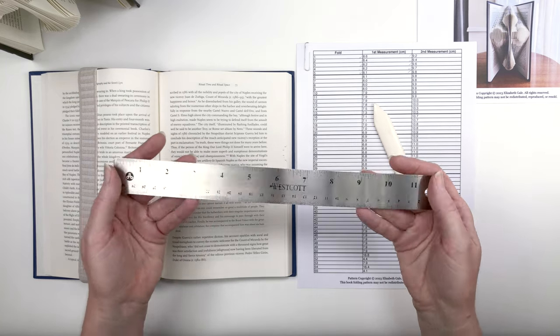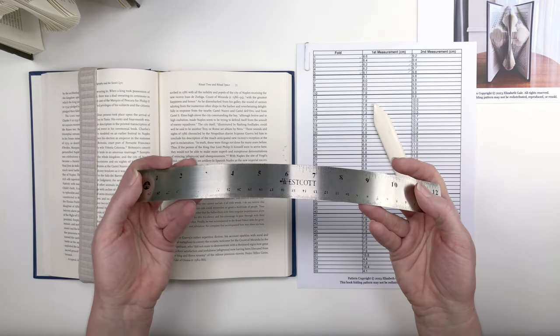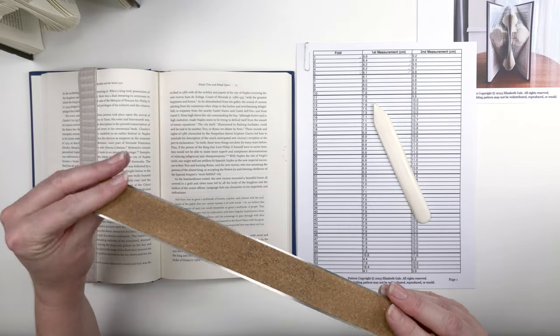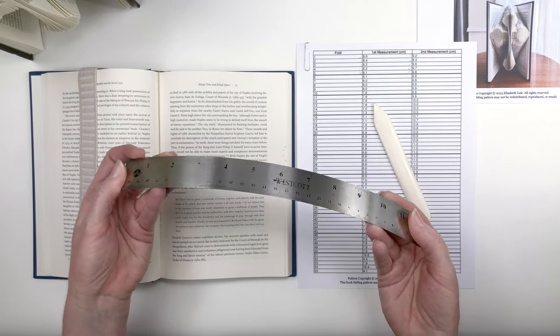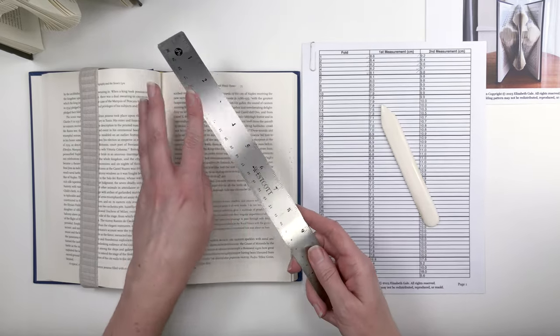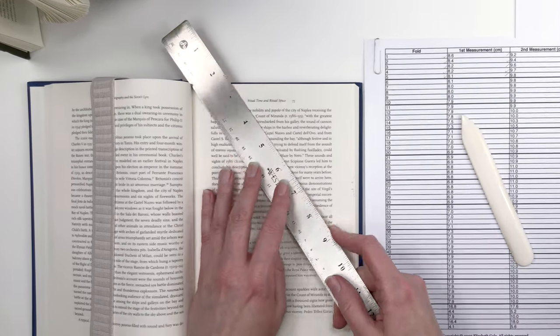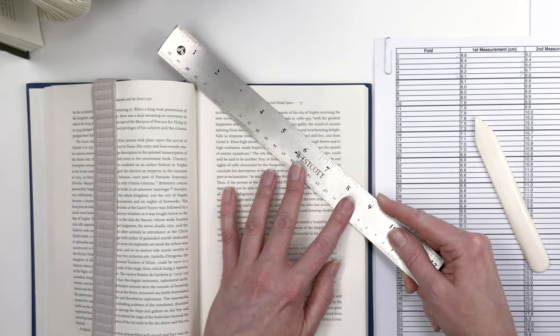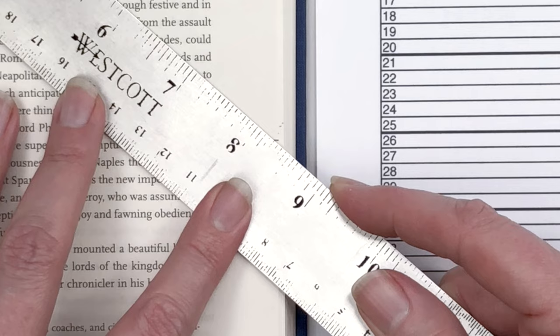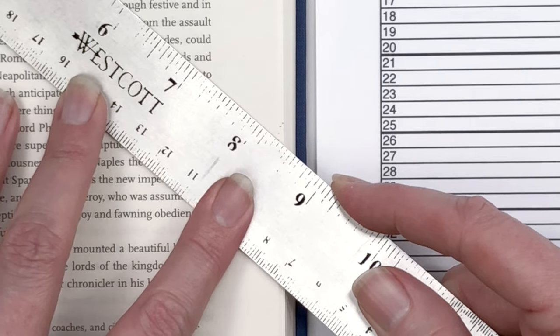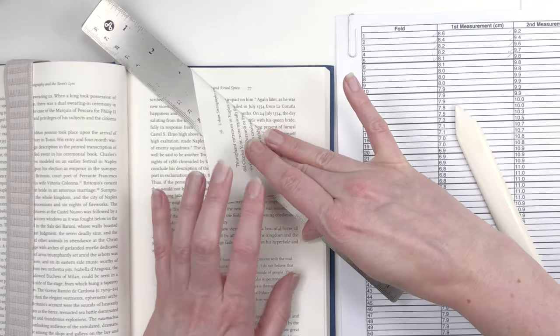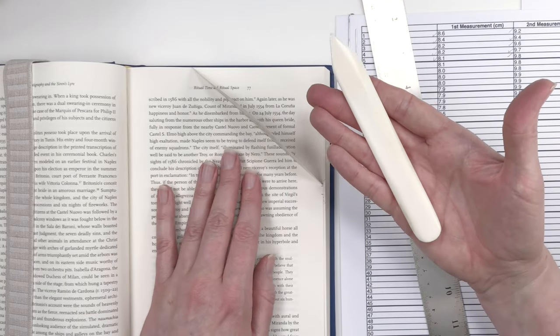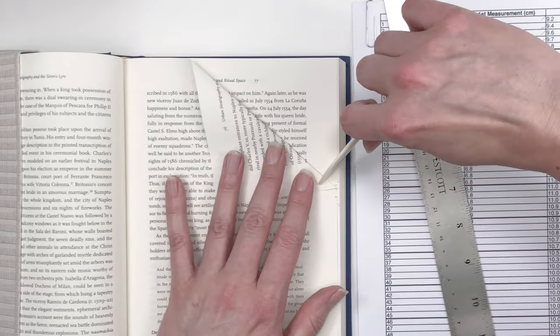We finished marking folds one through five so now let's go back and fold those. For folding, I like to use this thin metal ruler made by Westcott. It's nice and flexible and it's got cork on the back so it won't slip. So this is what I use for folding. And I put one edge up against the spine of the book and I place the opposite edge on the mark. So we're doing fold number one. I'll do the top measurement of 8.6 and I like to use a bone folder to give me a nice sharp crease on the paper.